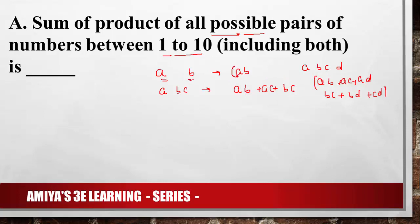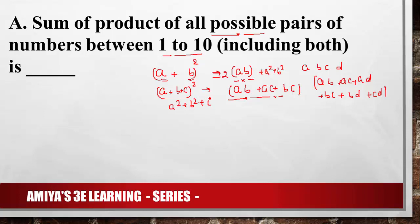How do we find all these? If you remember: (A+B)² = A² + B² + 2AB, and (A+B+C)² = A² + B² + C² + 2(AB + AC + BC). The twice-terms give us exactly the sum of products of all possible pairs.